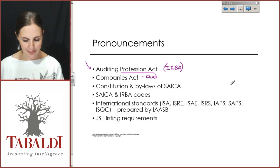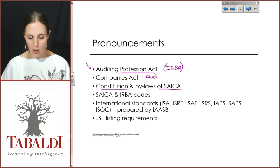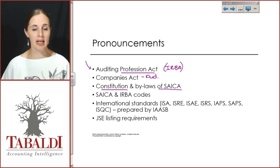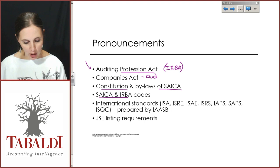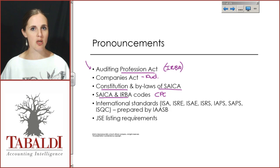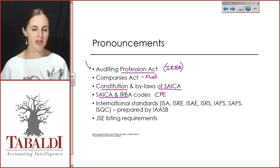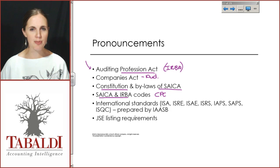We also need to be aware of any bylaws and requirements in the SAICA constitution, since we will be CAs as well. SAICA and IRBA codes — referred to as the Code of Professional Conduct — require us to maintain objectivity, confidentiality, professional behaviour, integrity, and professional competence and due care. These are the professional skills that users trust and base their reliance on us upon.